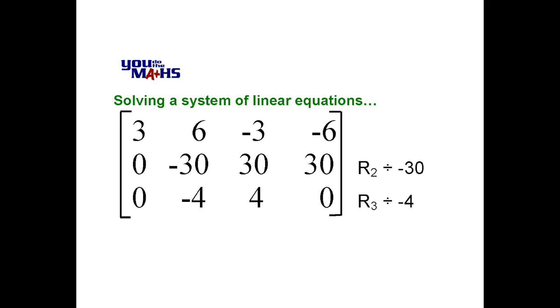To make life easier for ourselves, what we'll do is divide everything in row 2 by negative 30 and everything in row 3 by negative 4. Remember, these just represent equations, and if we perform the same operation to both sides of an equation, the equation remains true. Again, it would be wise to pause to see if you agree with the next step.